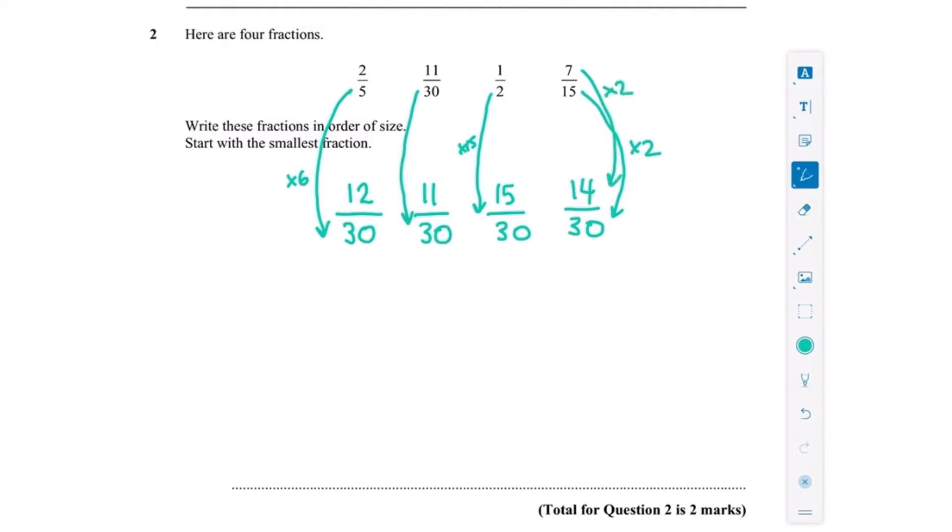Now it's a lot easier for us to see the order of these fractions. So we're going to start with 11 over 30, that's the smallest fraction, and then 12 out of 30, but I'm going to write that in the original format, so 2 fifths. Then it would be 14 out of 30, but that's 7 over 15 in the original format. And then 15 out of 30 is the largest, and that is a half. So that's on the non-calculator paper.